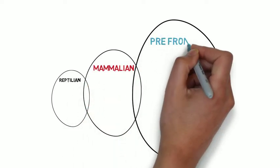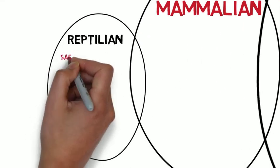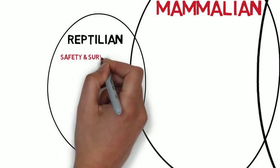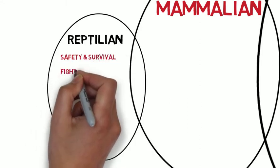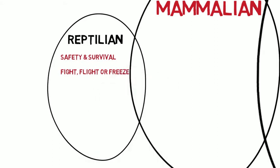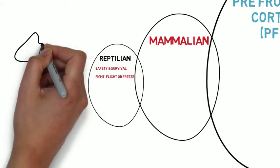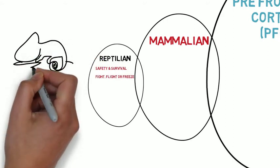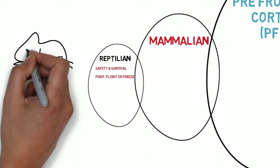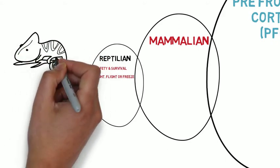Now, the reptilian brain is really interesting because it is the area that is about safety and survival. That's that fight, flight, or freeze. And it is the evolutionary component that keeps us alive. The reptilian brain itself is in pretty much every animal on the planet because the idea of the reptilian brain is to keep you alive. That's all it actually cares about.